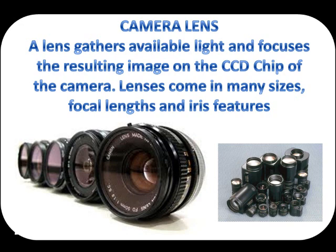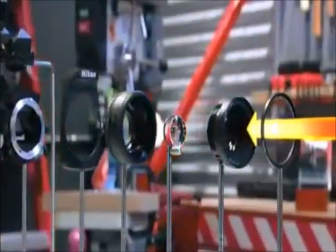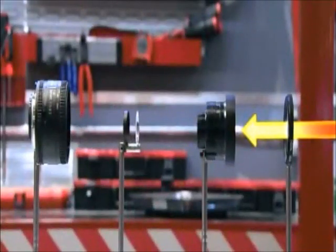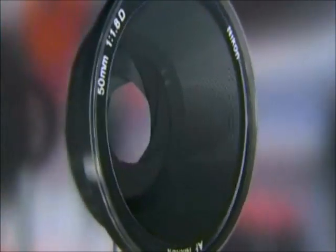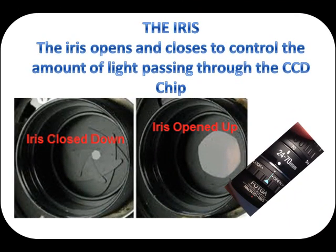A lens gathers available light and focuses the resulting image on the chip of the camera. Lenses come in many sizes, focal lengths, and iris features. Choose the wrong lens and you wind up with a poor or unusable picture. Adjusting the lens is also important for maximum performance. The iris opens and closes to control the amount of light passing through the CCD chip.